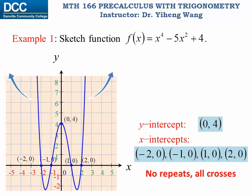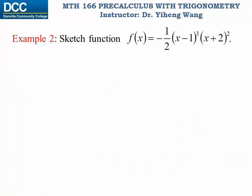When sketching the graph of a polynomial function, make sure you do not introduce new x-intercepts that you did not calculate. Example 2: sketch f(x) = -½(x - 1)³(x + 2)². This polynomial function is already written as a product of linear factors.